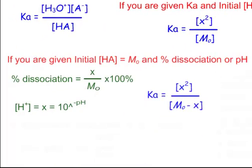If you're given initial molarity and percent association or pH, you're going to be finding Ka. The equation for percent association is X over the initial molarity. If you're given pH, find X, which is H+, by doing 10 to the negative pH. Then plug it into the equation — X squared goes on top, subtract from your initial molarity because you can't assume here when finding Ka.